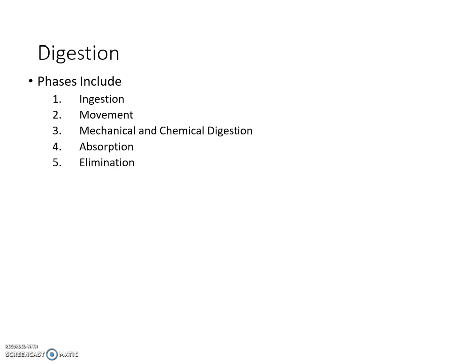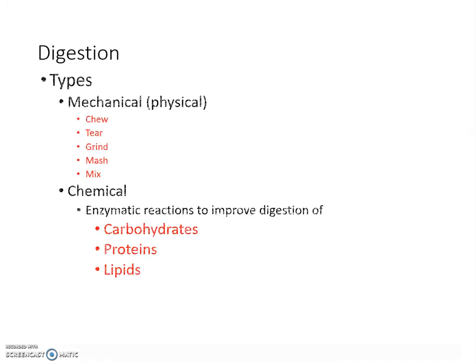Digestion is broken into five different phases: ingestion, movement, mechanical and chemical digestion, absorption, and then elimination. We'll talk about each and every one of those during today's presentation. The two main types of digestion are mechanical and chemical.